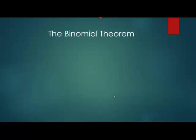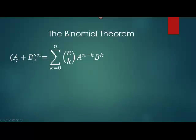The binomial theorem tells us that if we have a binomial — I'll just call it a plus b — and we raise it to the power n, it is equal to this sum. The first thing we're looking at is the capital Greek letter sigma. Whenever you see that, it tells you that we're going to be adding some terms together. And if you think about what a polynomial is, it's just a bunch of terms added together. A is the first term of the binomial, raised to the n minus k power. B is the second term of the binomial, raised to the k power.